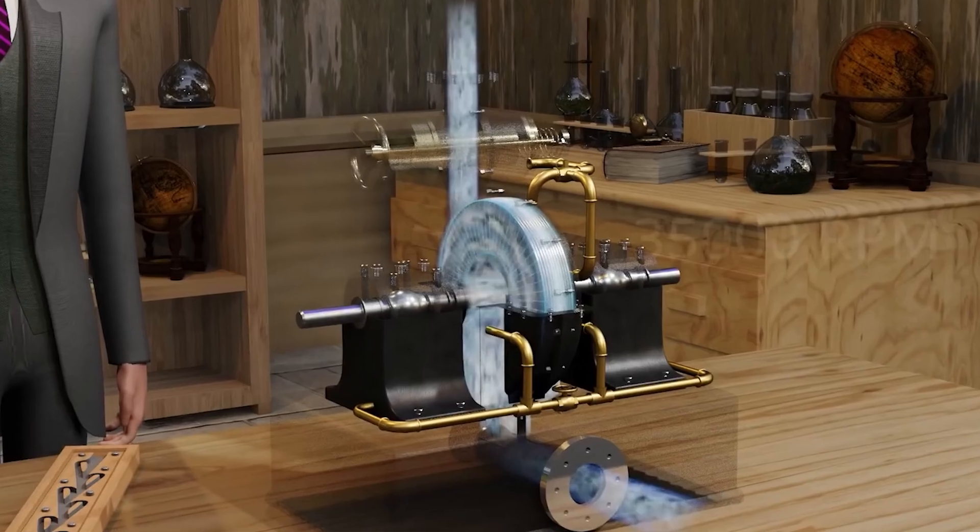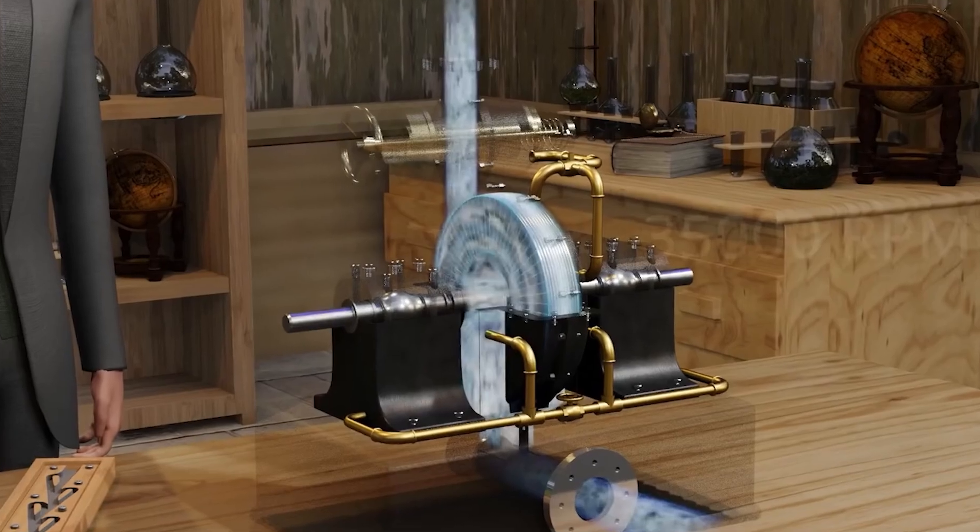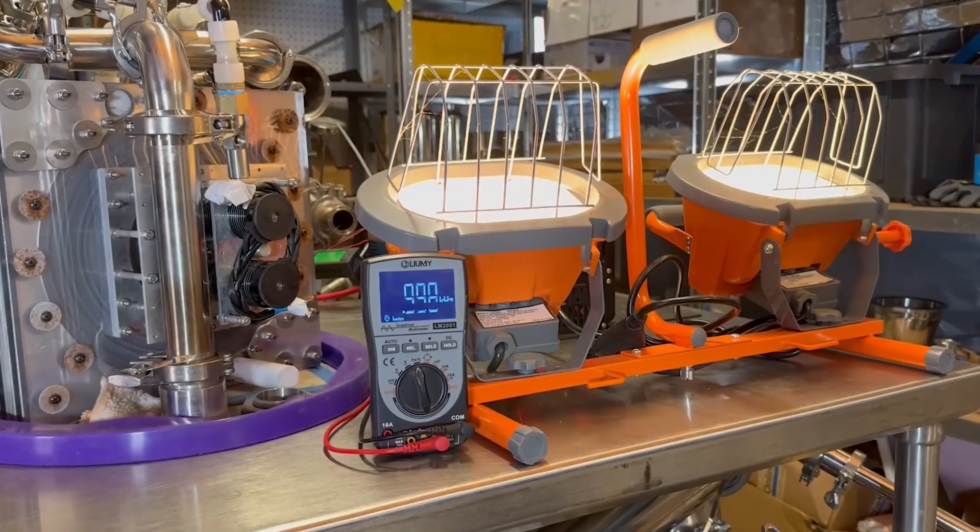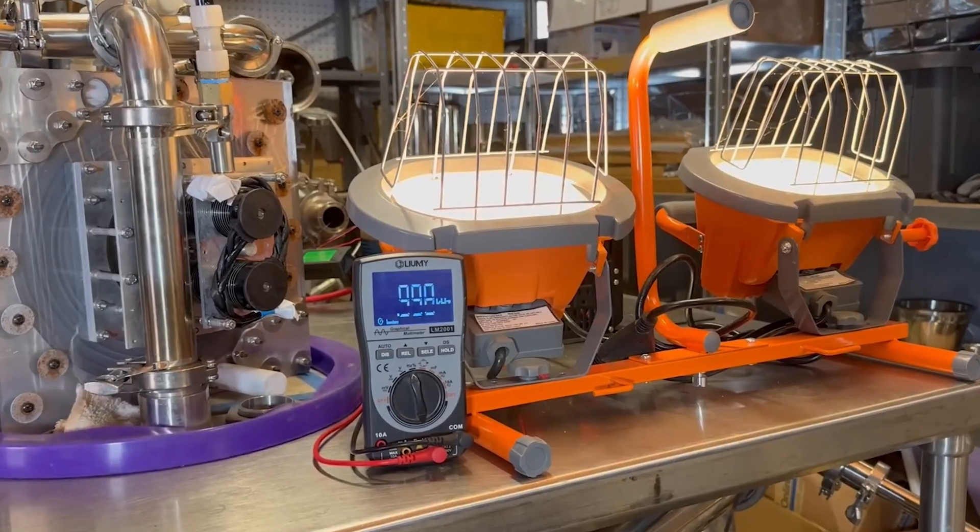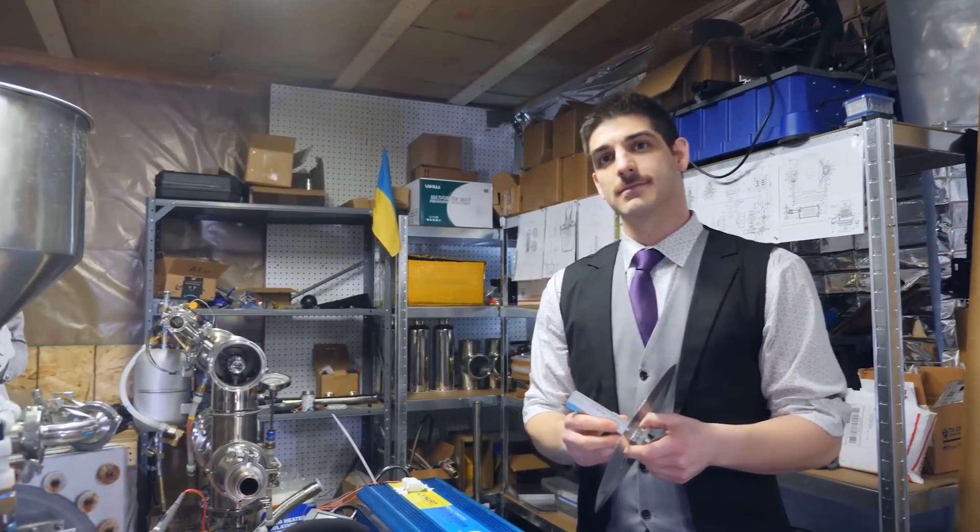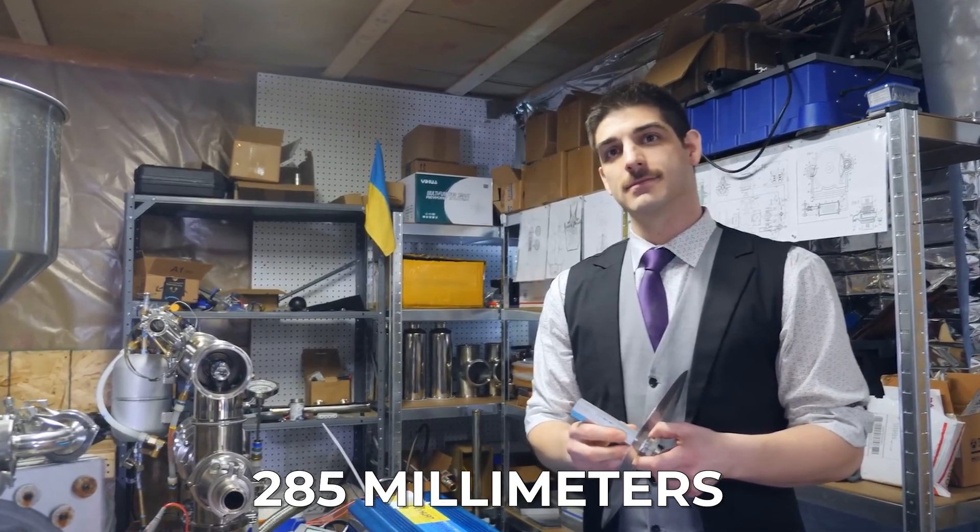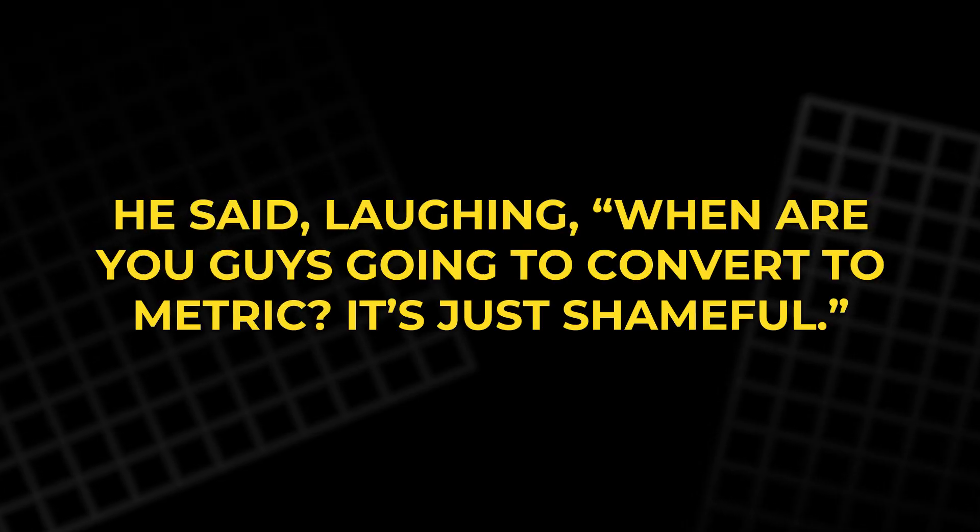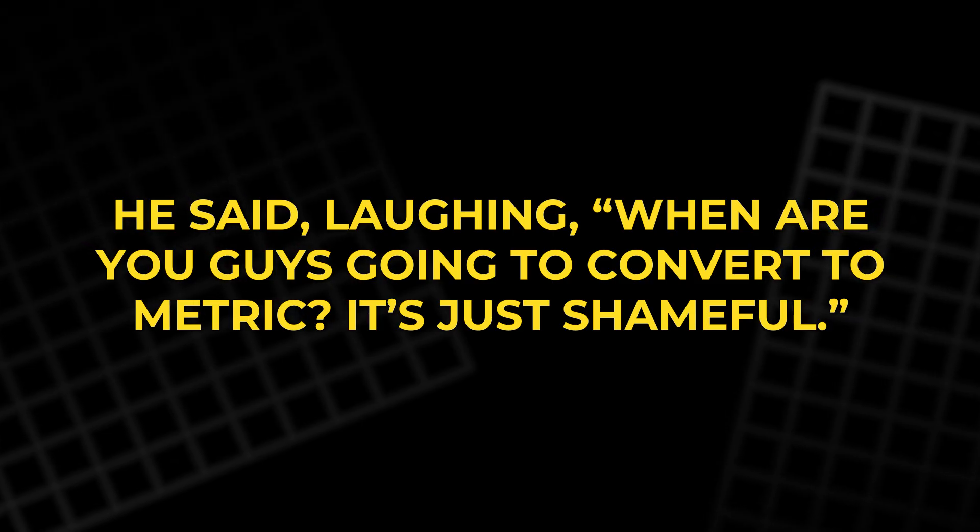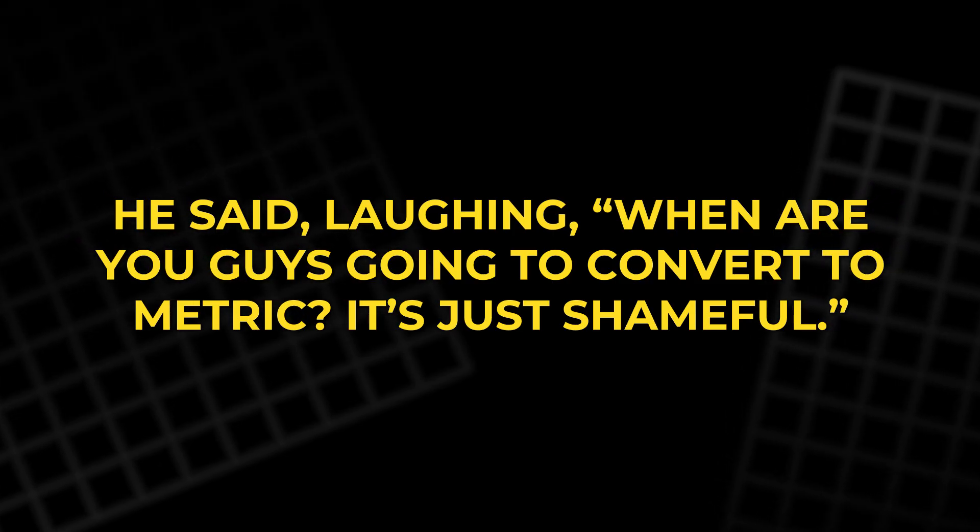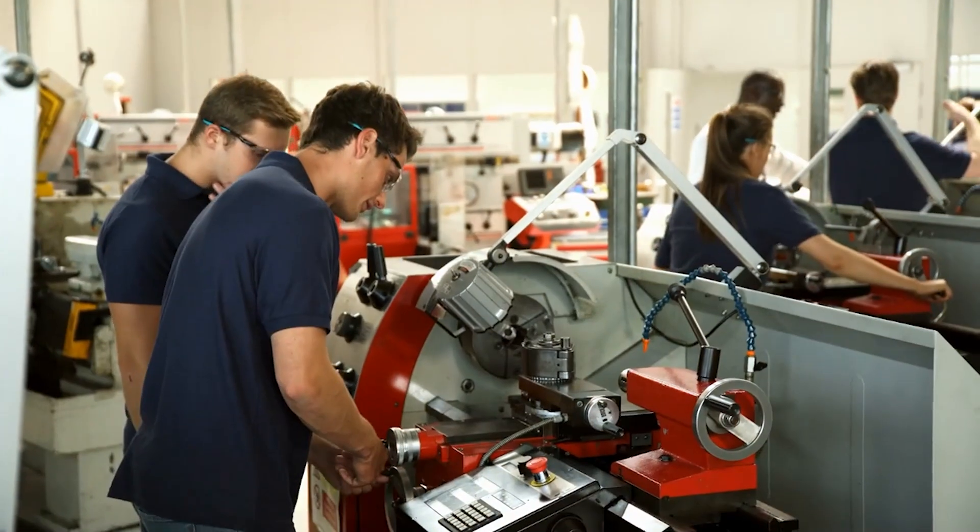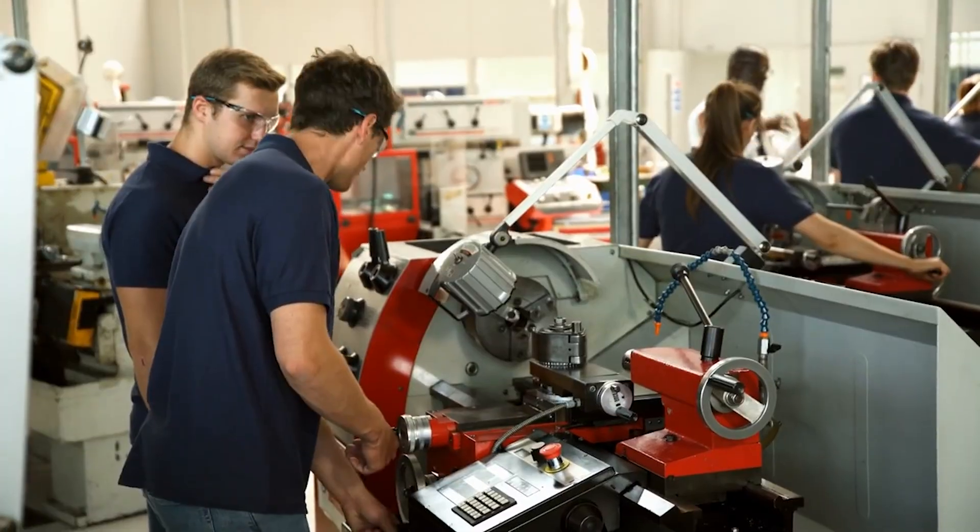With steam instead of air, the output would be much higher. Charlie's setup was surprisingly compact, fitting on a small stainless steel table. He even joked about measurement systems. It's 285mm squared going in, he said, laughing. When are you guys going to convert to metric? It's just shameful. He added that although all his physics knowledge was in SI units, real-world parts were still made in American standards.